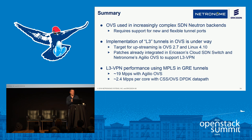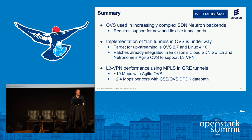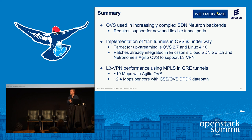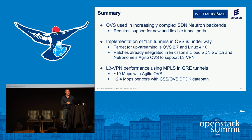In summary: we took a look at OVS, which is the de facto standard with everything moving towards being integrated into OVS from both Layer 3 and Layer 2 functionality. It's been well accepted across the majority of vendor SDN controllers. As we work on providing the Layer 3 support, making sure we have flexibility from the tunnel support into OVS itself — our latest enhancements are going to be available within OVS 2.7 as our target, and Linux distribution 4.10 hopefully. Patches are already integrated into the Netronome SmartNIC as well as the Ericsson Cloud SDN switch available today. With hardware offloading we were able to get around 19 to 20 million packets per second, and on the Cloud SDN switch without hardware offloading we were seeing around 2.4 million packets per second on a DPDK-enabled data path.